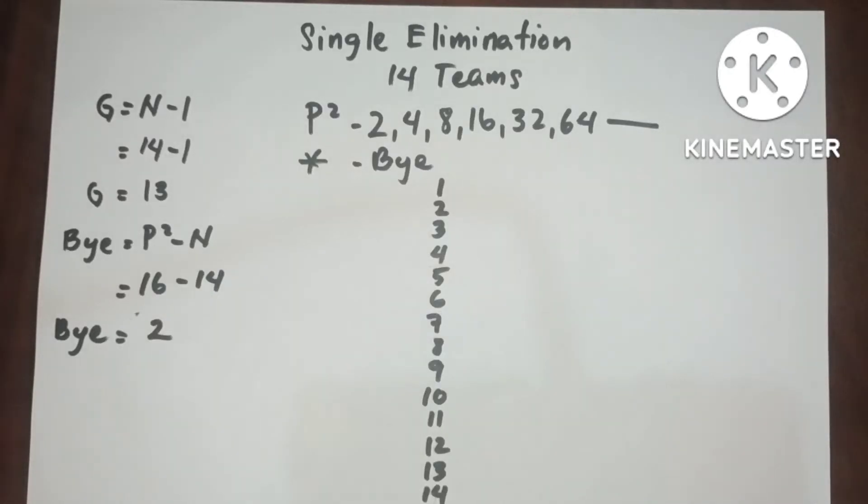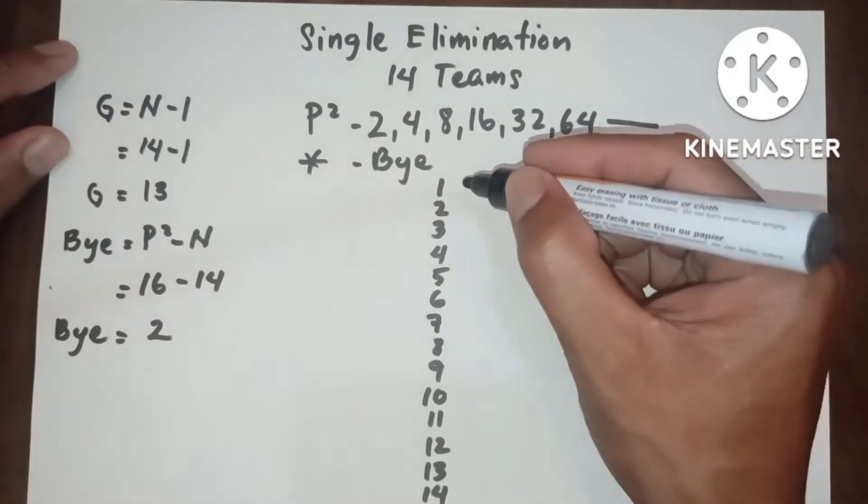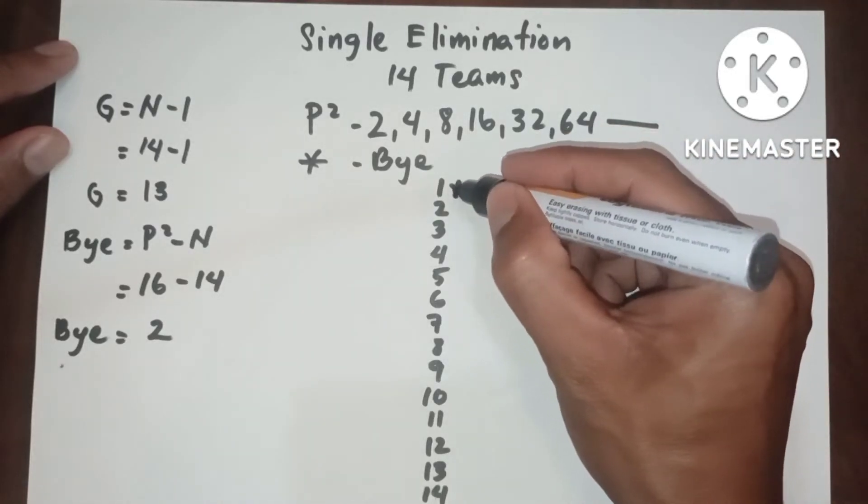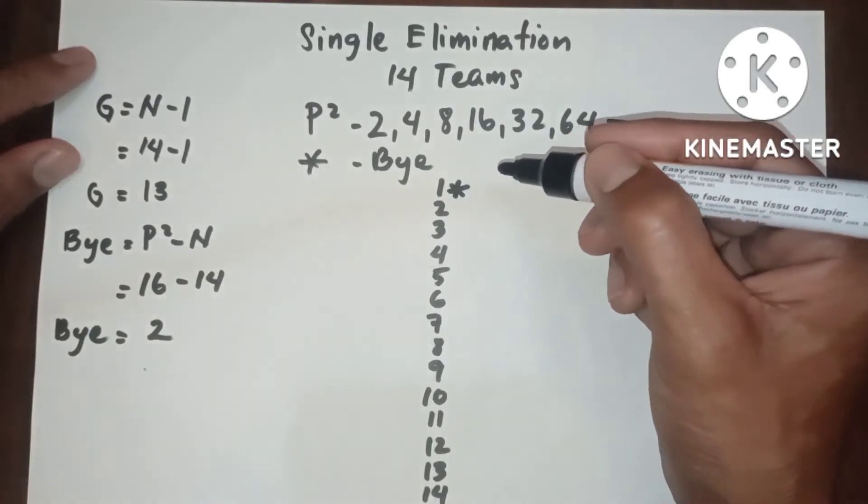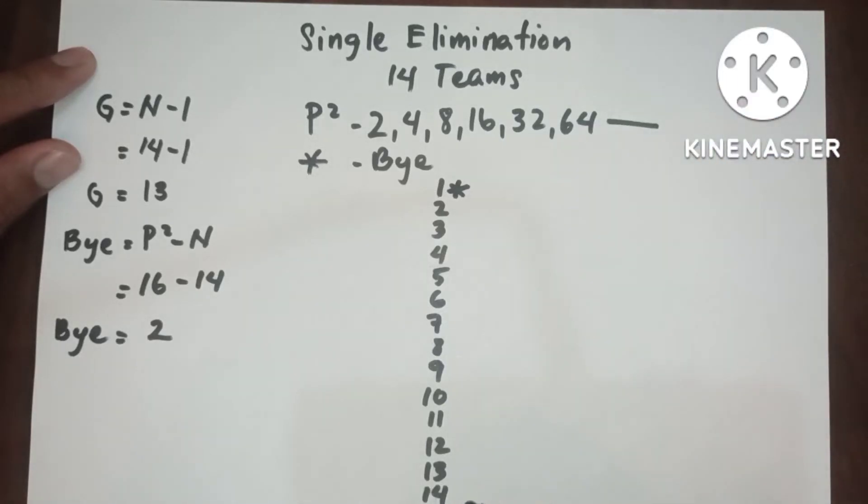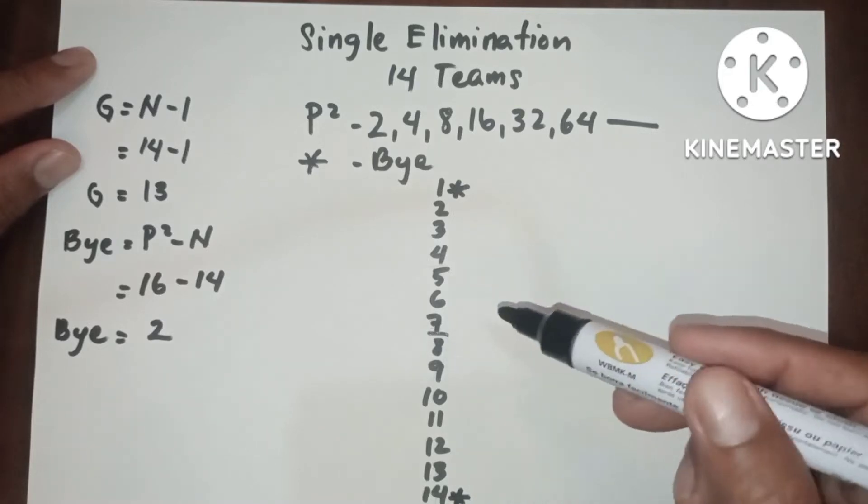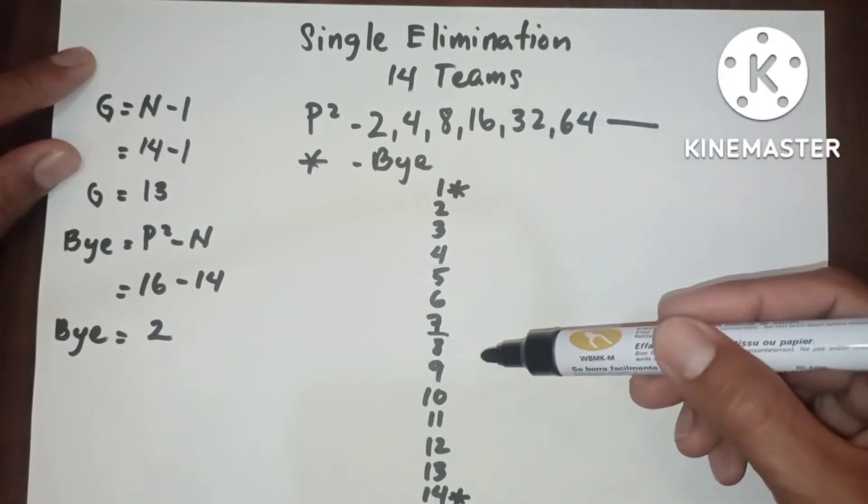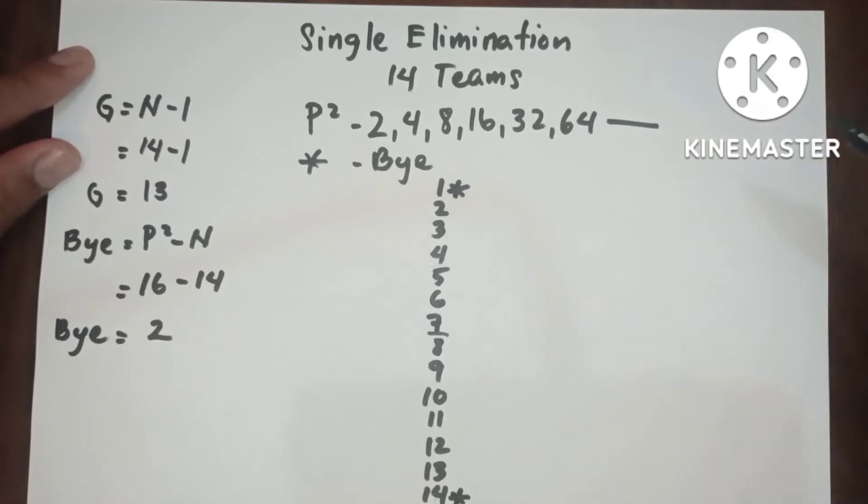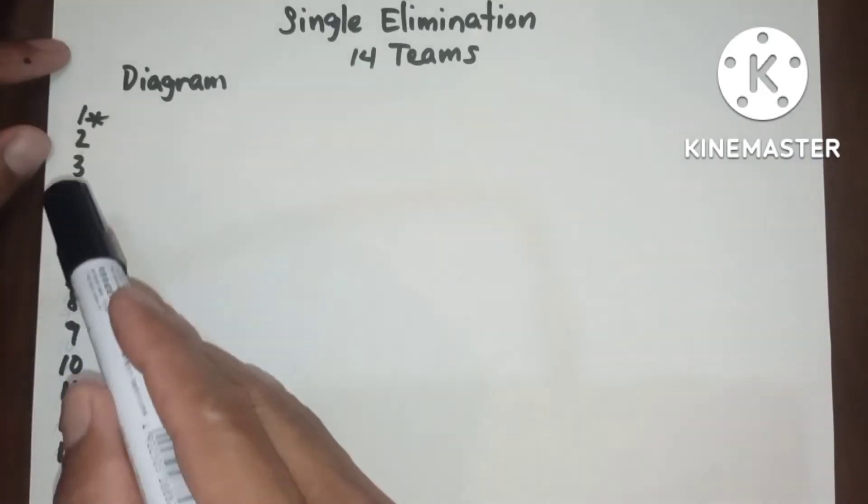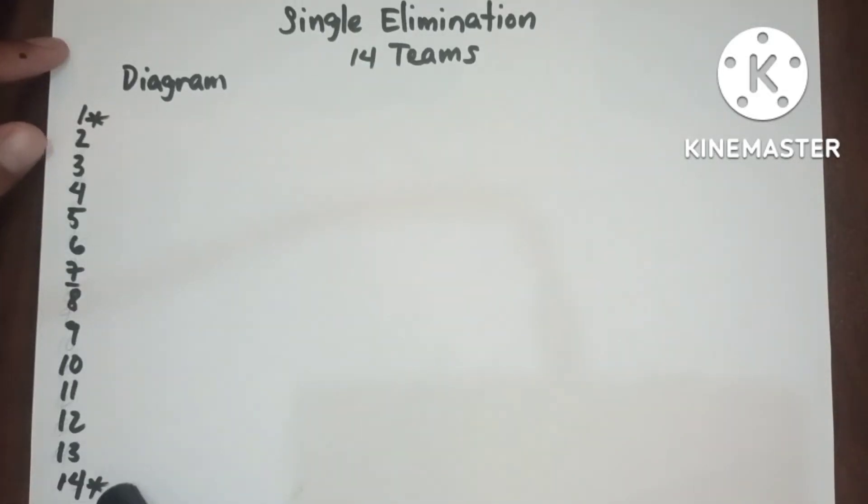Since we have two byes, the first one should be placed at the top of the upper bracket, and the other one should be placed at the bottom of the lower bracket. So this is the upper bracket and this is the lower bracket. Now let's proceed to diagram and game schedule. Since we have two byes, 1 and 14.